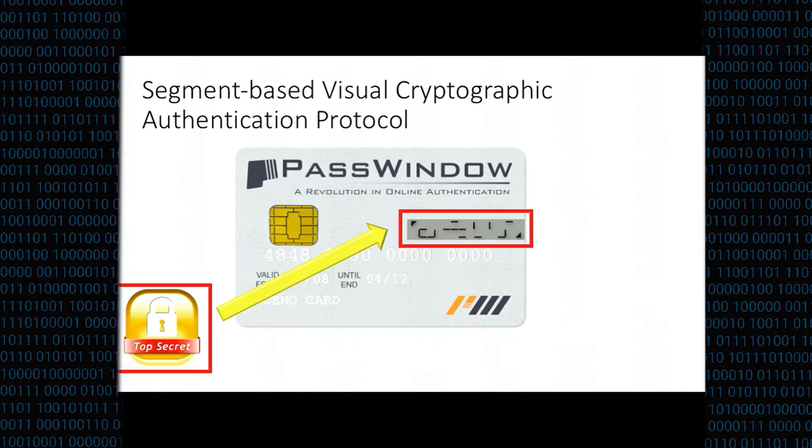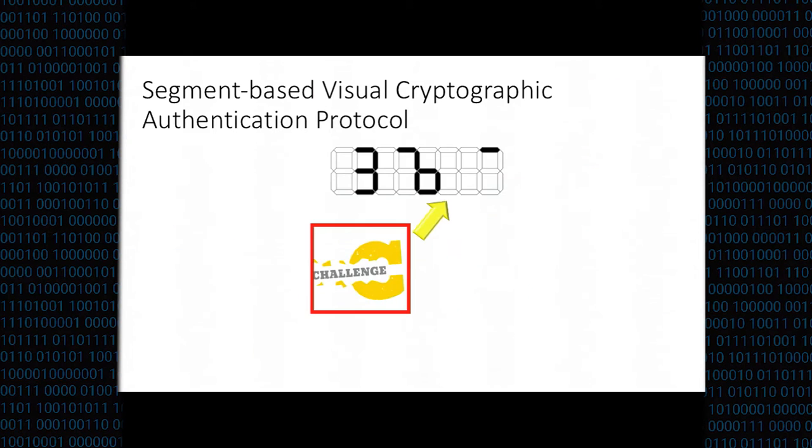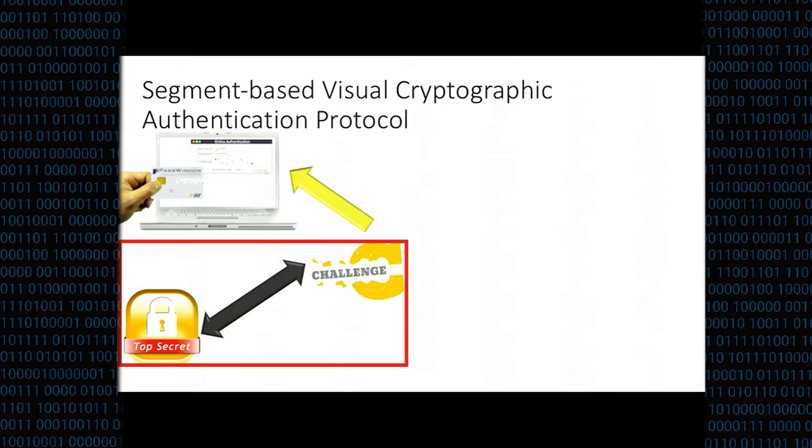The token secret refers to the product. If we apply PassWindow here, the token secret is actually this credit card. The challenge is maybe one image or several images. The interaction between the token secret and the challenge is basically if you have a credit card and there are images on the screen of the monitor, you can just superimpose your credit card and read out some secret from the screen.